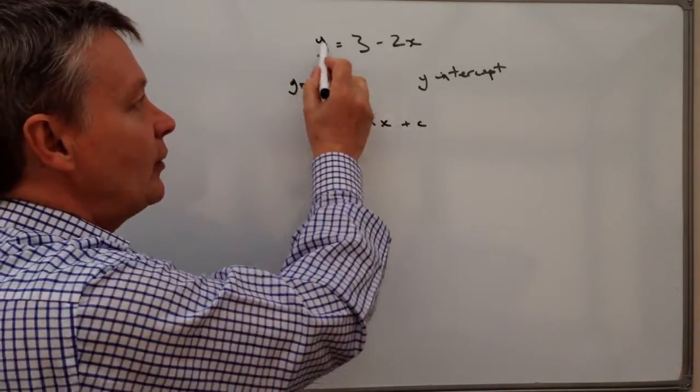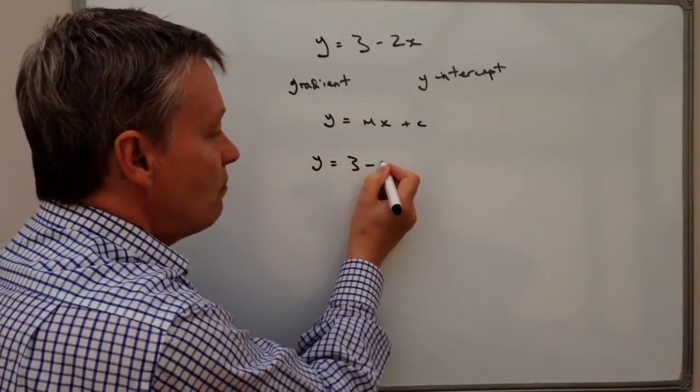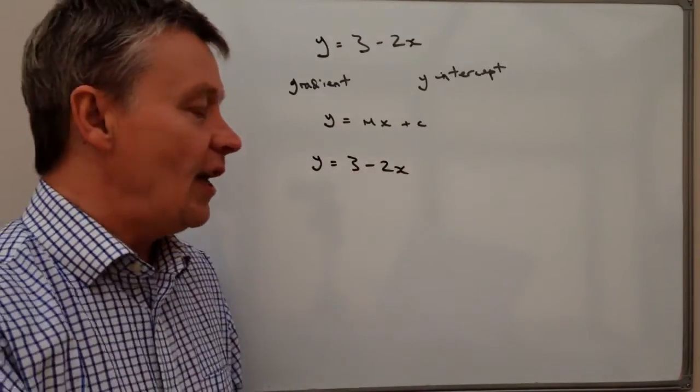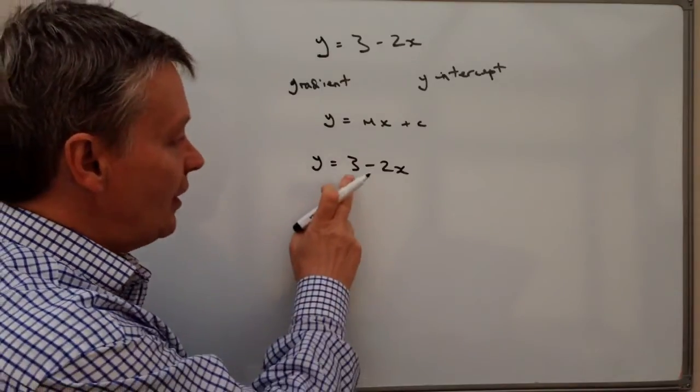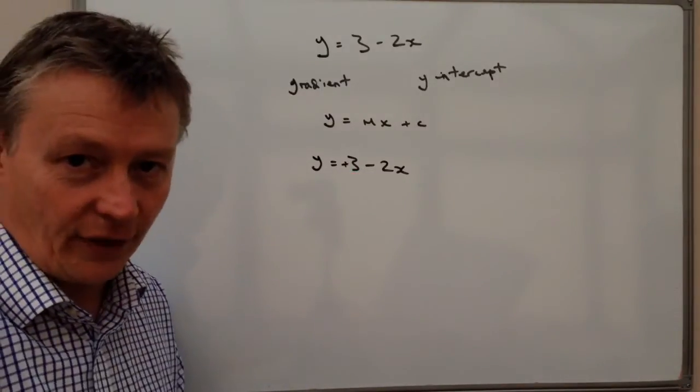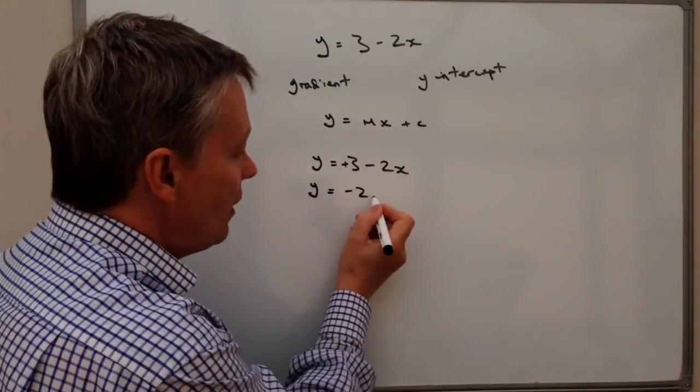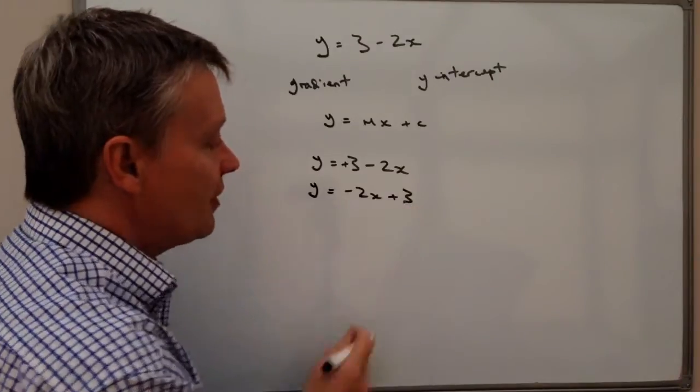So what I'm going to do is, if I look at that equation, I've got y equals three minus two x. Well, if you imagine that at the front of this three there's actually a positive, it's a plus three. So what I'm going to do is I'm going to change it to y equals minus two x plus three.